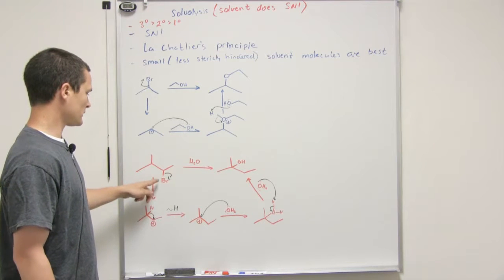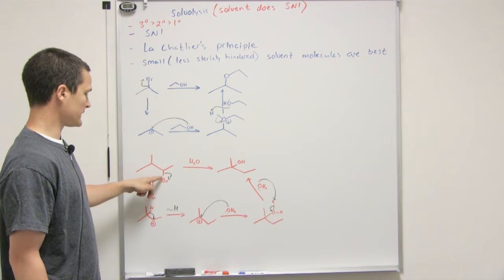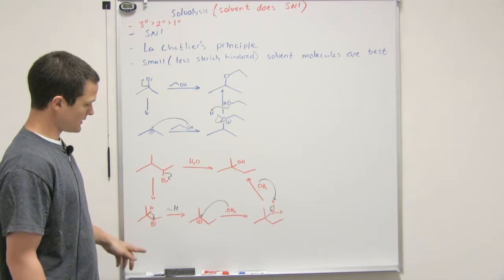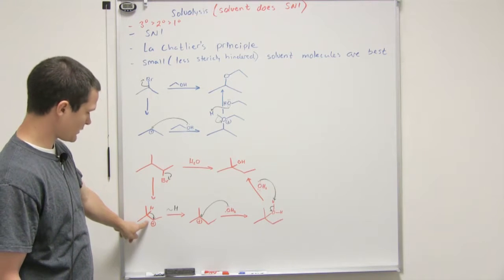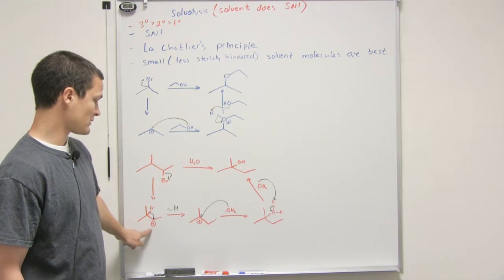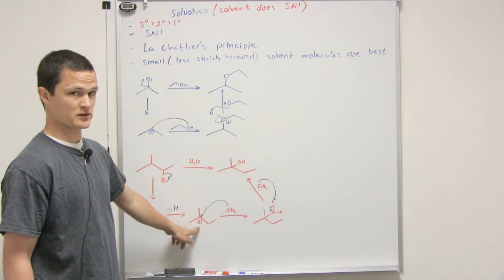So if we use water, once again the bromine is just going to fall off, it's secondary so we can do that. When we do that however we'll notice that we can do a shift to give us a more stable carbocation to give us a tertiary.